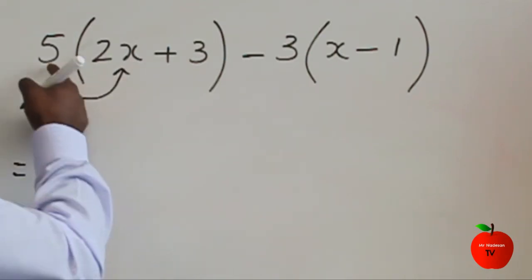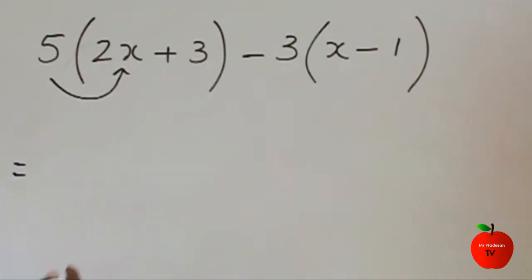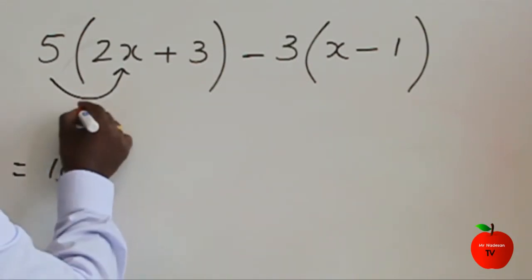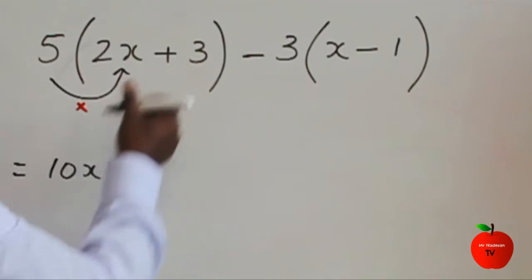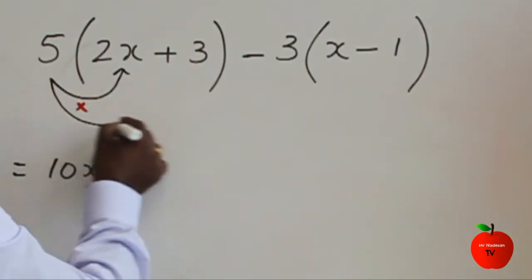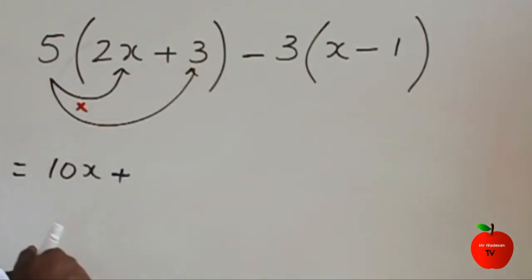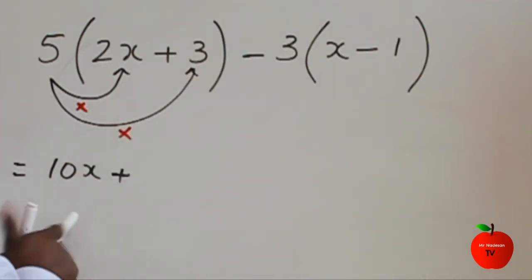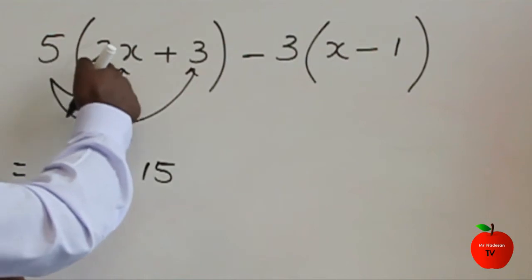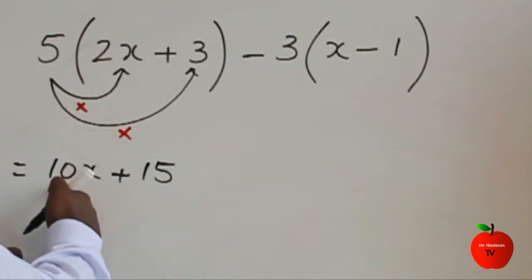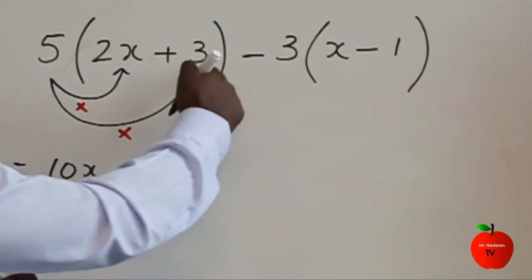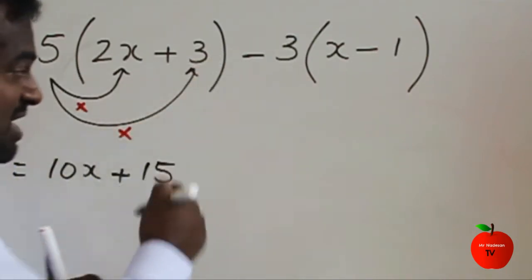So 5 times 2x is going to 10x. You have to multiply that. Then plus, 5 times 3 gives 15. So 5 times 2x is 10x, plus 5 times 3 is 15.